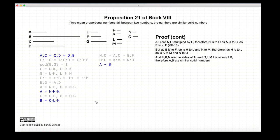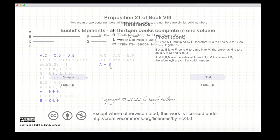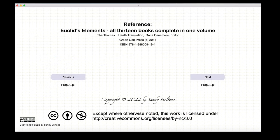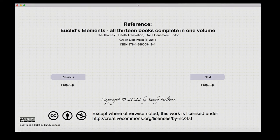So we have thus shown, finally, that if we have four numbers in continuous proportion, the first and the last are solid numbers, and they are similar solid numbers.